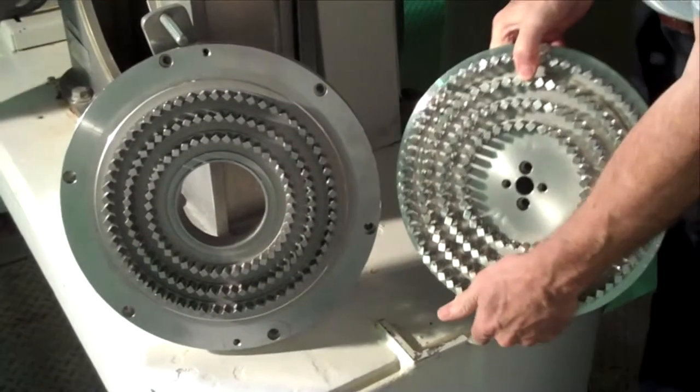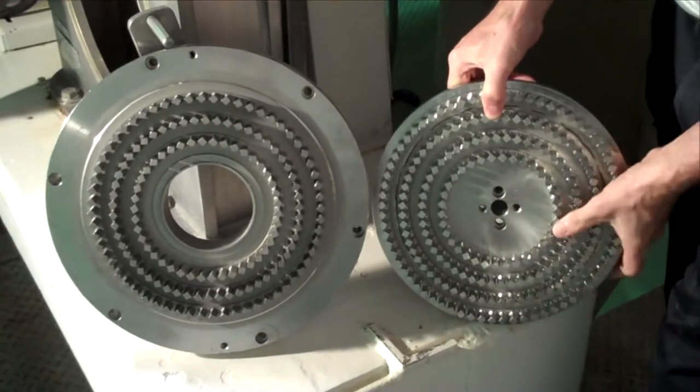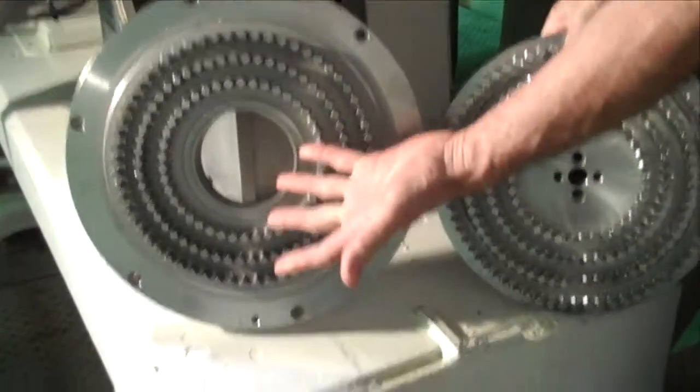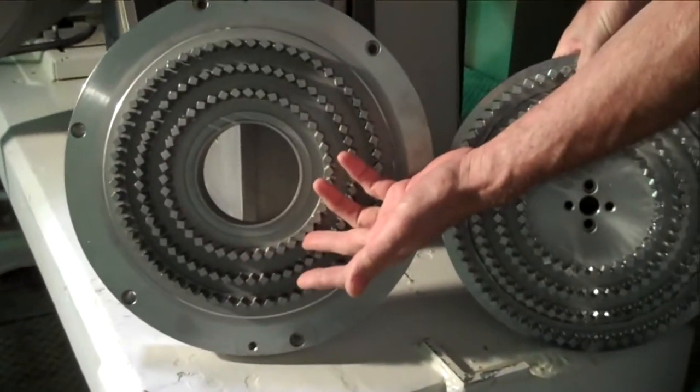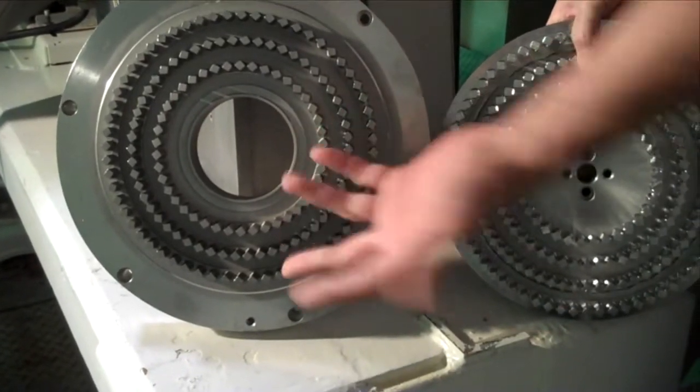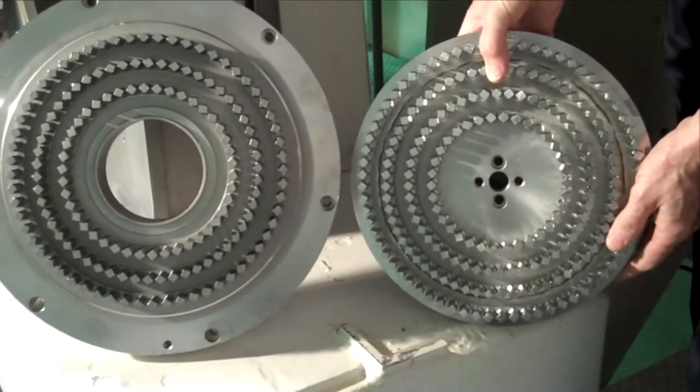The first example of interchangeable grinding media is the pin disc arrangement. Here we have the fixed stator mounted on the door and here we have the rotor which connects to the main drive.